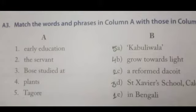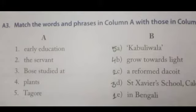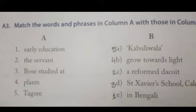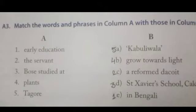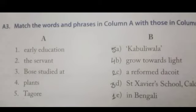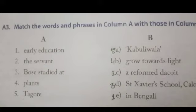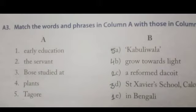Now you have to see A3 down. Match the following words and phrases in column A with those in column B. Number 1: Early education. 2: The servant. 3: Bose studied at. 4: Plants. 5: Tiger. Column B — A: Kabuliwala. B: Grow towards light. C: Ariform Dacoit. D: St. Xavier School, Calcutta. E: In Bengali.